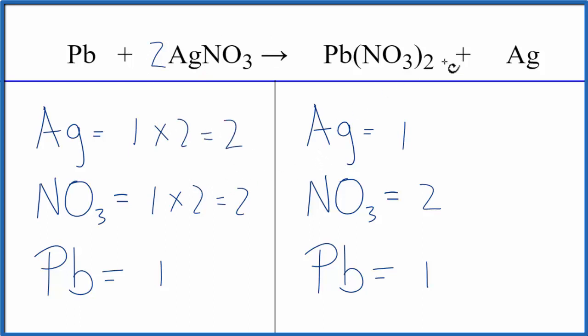That's pretty easy to fix, the silver's by itself over here. I have 2 silvers on the reactant side and just 1 on the product. I need 2 here to balance the equation, so I put a 2 in front of the Ag. 1 times 2, that'll give me 2 silver atoms, and we're done.